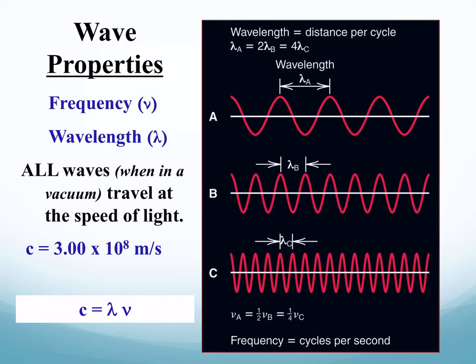Wave properties: we have two things to talk about — frequency and wavelength. Wavelength is the distance between two crests or troughs. In this picture, wave A has the longest wavelength; wave B has a much shorter wavelength with crests closer together; and wave C has the shortest wavelength with crests even closer together. So wave A has the longest wavelength and wave C has the shortest.